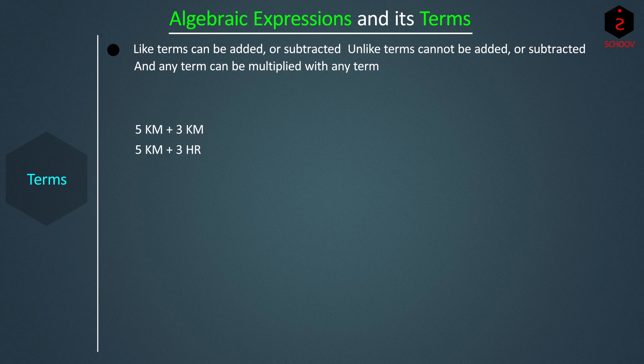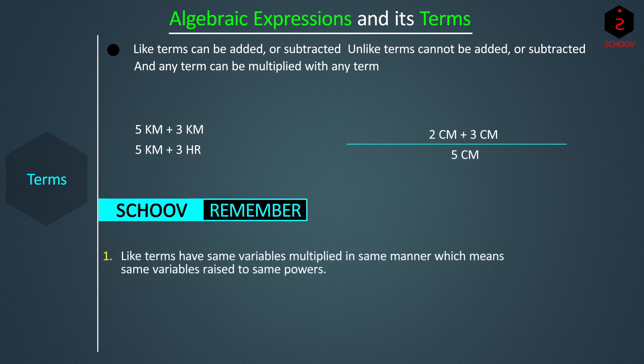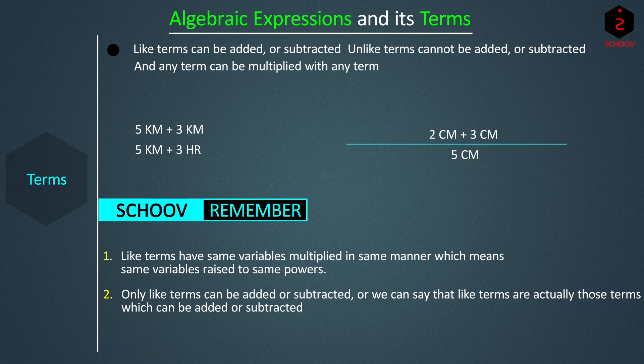We have added like terms and written the algebraic expression with all unlike terms. Why? Because it is easy to write and it makes sense to add like terms. Rather than saying the length of a line is 2 cm + 3 cm, we can simply say its length is 5 cm. So like terms have the same variables multiplied in the same manner — meaning same variables raised to the same powers — and only like terms can be added or subtracted. Any term, however, can be multiplied with any term.